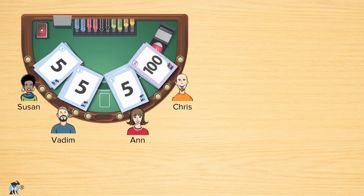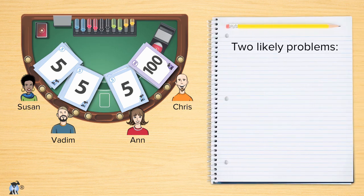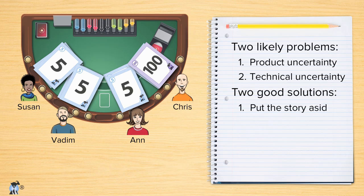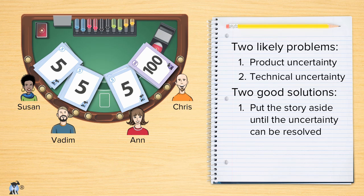Now, if Chris had been holding up a 100 instead of an 8, I wouldn't want him to fold. If we're that far apart, we're probably facing one of two problems: one, product uncertainty — the product owner says something like "good question, I better run that by some users, it could go either way"; or two, technical uncertainty — when the team thinks the user story will be easy using one technical approach but hard using another. So whether it's product or technical uncertainty, if the estimates are hopelessly far apart, put the story aside, do the research, and then estimate the user story next week or whenever you get together again.